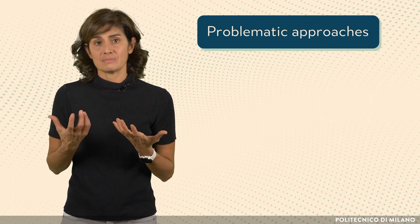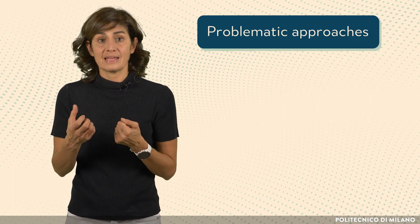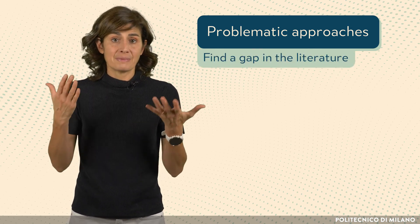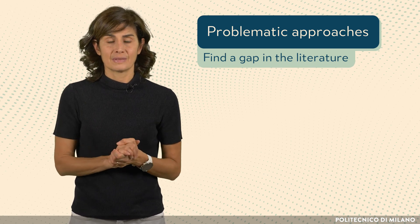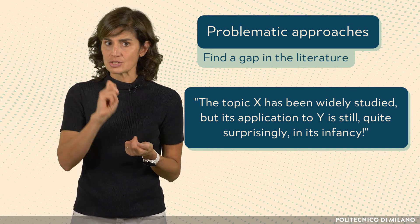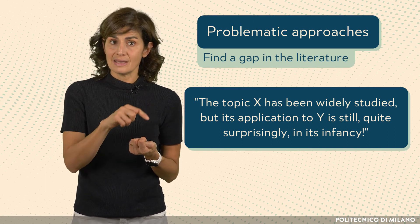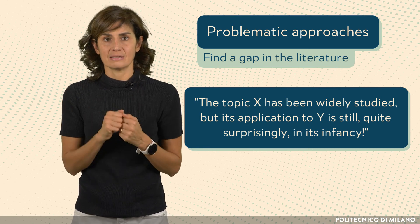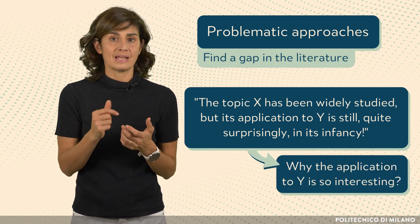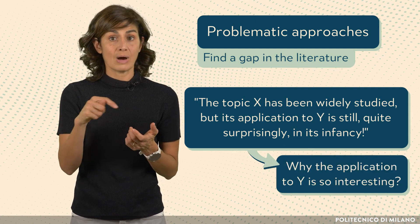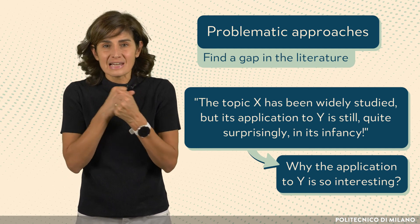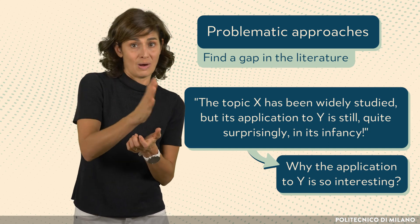Problematic approaches can take many forms according to what problem they identify. The simplest way is to identify a gap in the literature — something like: 'Topic X has been widely studied, but its application to Y is still, quite surprisingly, in its infancy.' In this case, you may also want to add why the application to Y would be so interesting — make the reader feel we cannot live without applying X to Y.